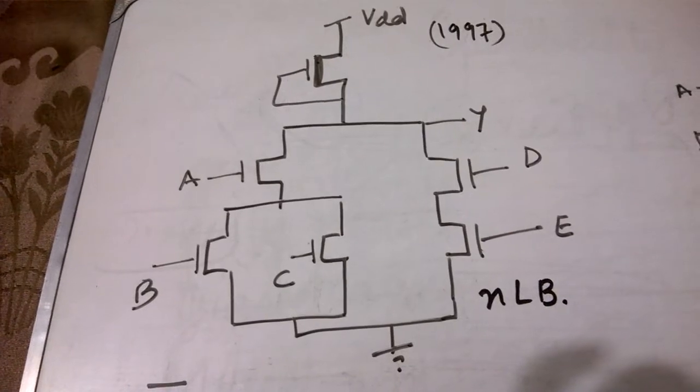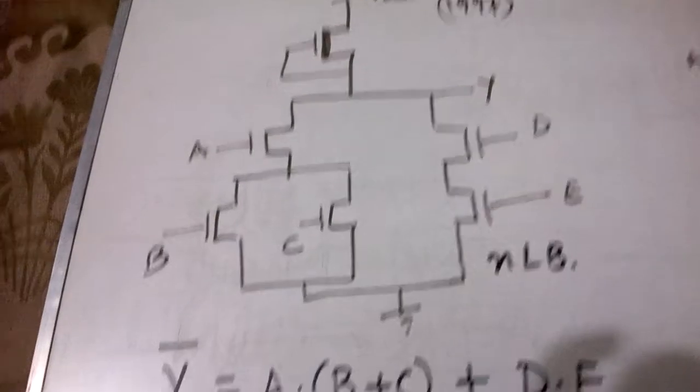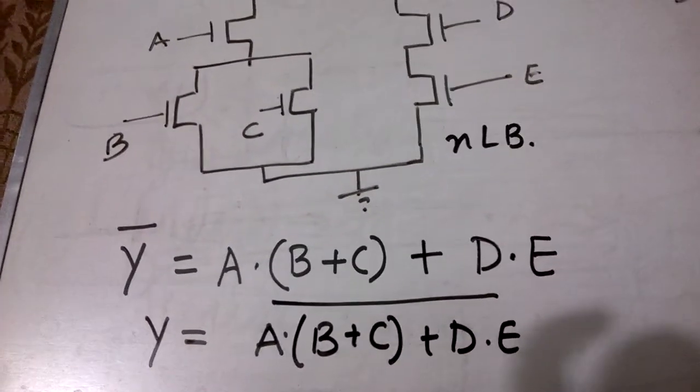So how do we write Y? Y will be equal to A dot B plus C plus D dot E, whole bar. So this is the complete expression for the given logic structure.